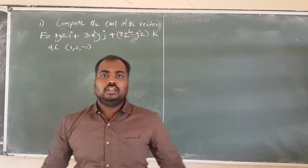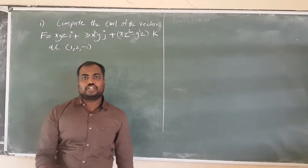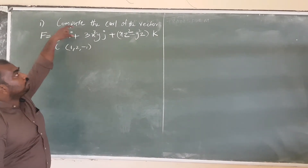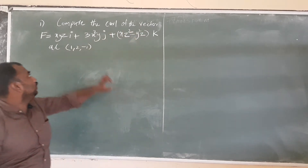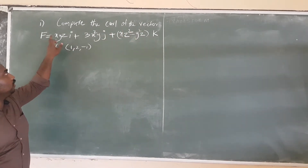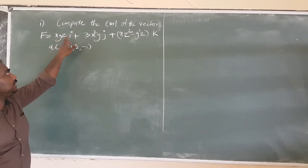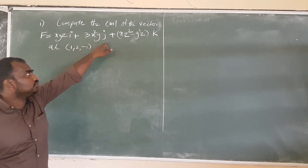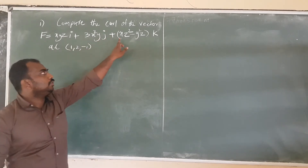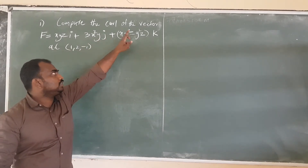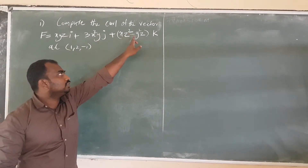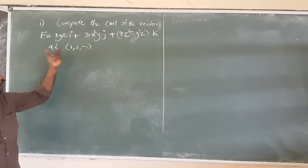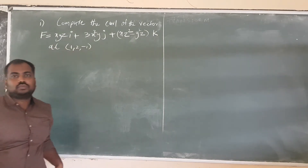Here is another problem. Question 1: Compute the curl of the vector field F equal to xyz·i plus 3x²y·j plus (x²minus y²)z·k at the point (1, 2, 0).